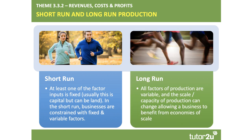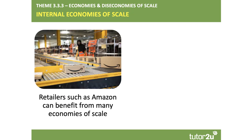In the long run, all factors of production are variable, and hence the scale and capacity of production can change, allowing businesses to benefit from economies of scale. This distinction between short-run and long-run is theoretical. In modern manufacturing and digital services, for example, this distinction is pretty much meaningless. But what is clear is that the extent to which businesses can benefit from economies of scale is important in many fast-changing markets and industries.